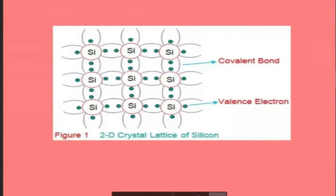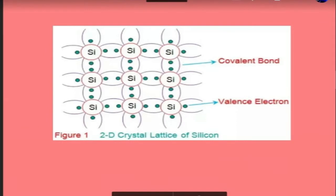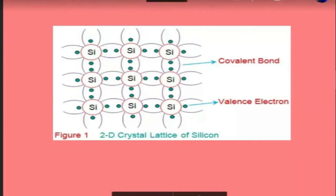For example, look at this diagram — silicon atoms have four electrons in the outermost shell. You can see the two electrons on either side of the silicon atom. Draw this diagram in your notebook and type done in the chat box when you are finished.